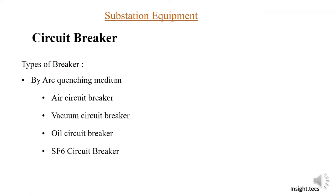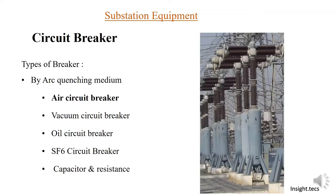The first one is the air circuit breaker. As the name suggests, it uses compressed, pressurized air to quench the arc. As you can see in the image, inside the tank there is very compressed air that is used to quench the arc whenever there is any fault in the equipment.